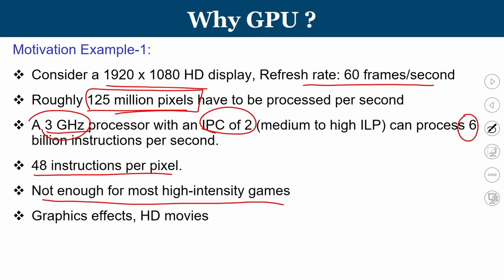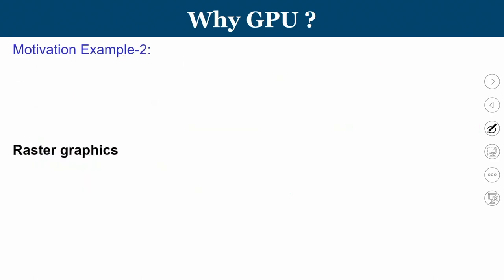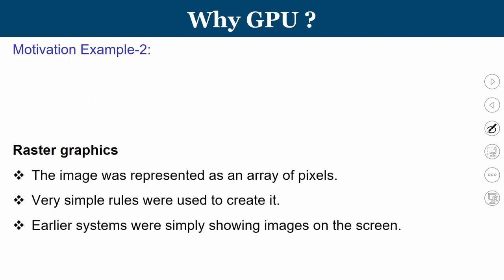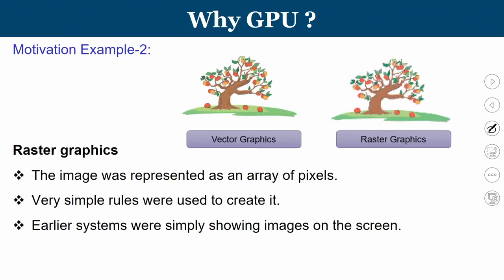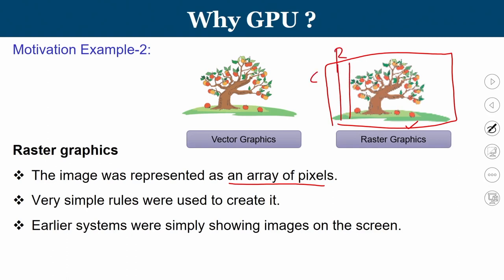This is not enough for high-intensity game applications. Sometimes the refresh rate may be higher and sometimes very high resolution displays are also used. When it comes to graphic effects and HD movies, more pixel processing is required and a conventional CPU may not be able to sufficiently support it. In raster graphics, an image is represented as an array of pixels. At each pixel location we specify the color value using multiple bits.